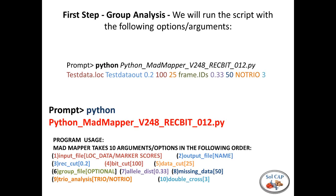MADMapper also implements another way of looking at recombination through a score called the BIT score. If you go into the README file it explains how that works. Basically, the higher the BIT score, the lower the recombination — the tighter the markers are linked. We recommend a score of 100 here, but I don't want to get into the details of what a BIT score is.